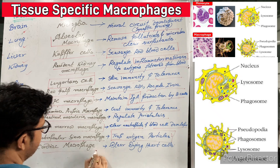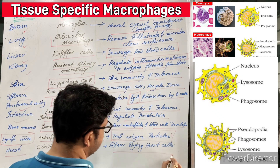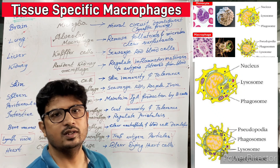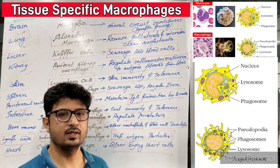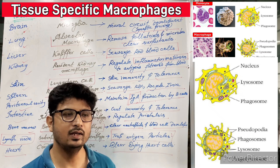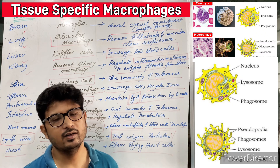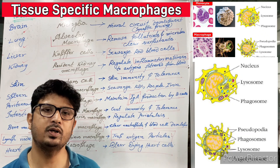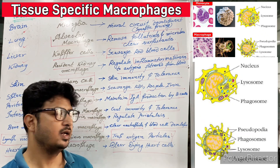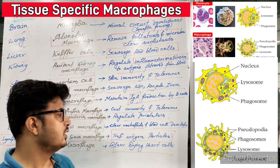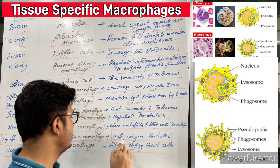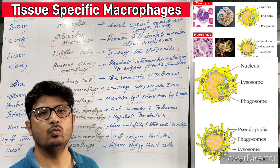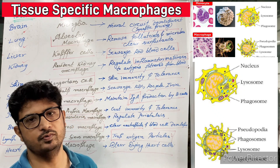Coming to the heart — cardiac macrophages have a simple function: they clear dying heart cells. The remnants of dying heart cells release chemicals that may interfere with the function of the heart, so anything not required in the heart tissue is cleared by these macrophages. Dying or damaged heart cells are removed.